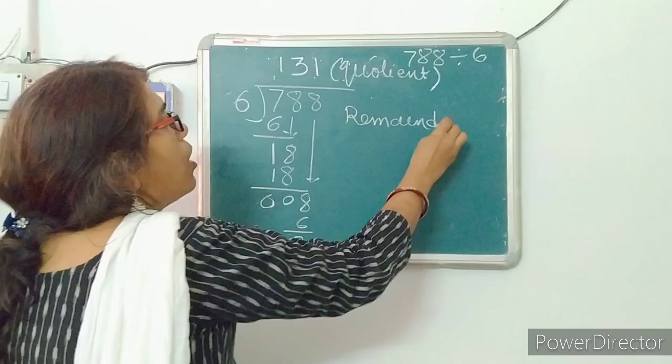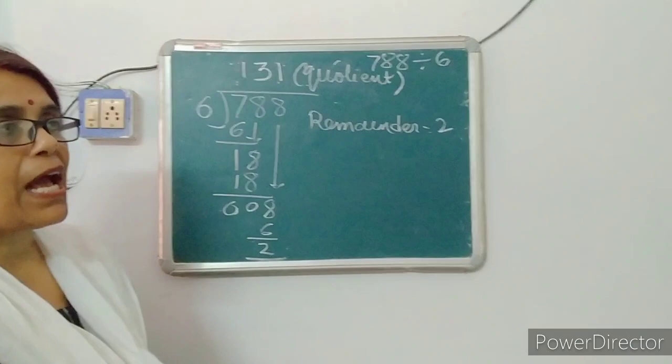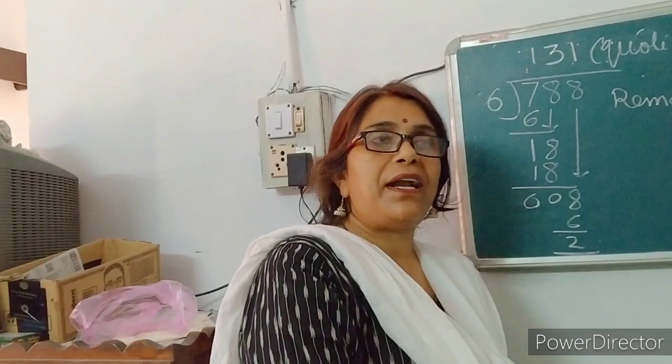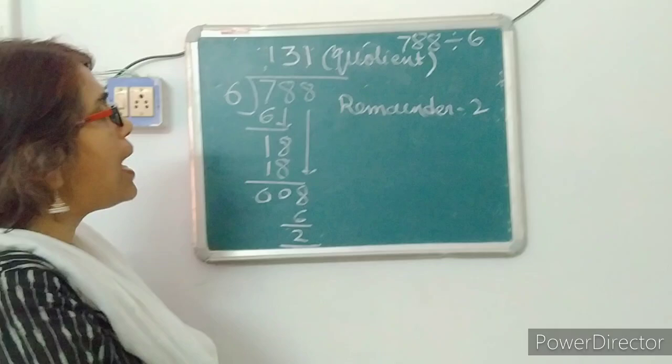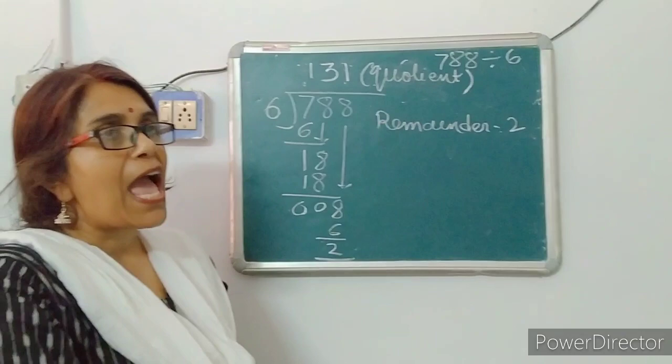All of you, write down this division sum in the copy. This is the division sum. By doing this activity, I tried to explain division. Now all of you write down this question and try to solve it in the copy. After that, you will write down the definitions of dividend, divisor, quotient, and remainder.